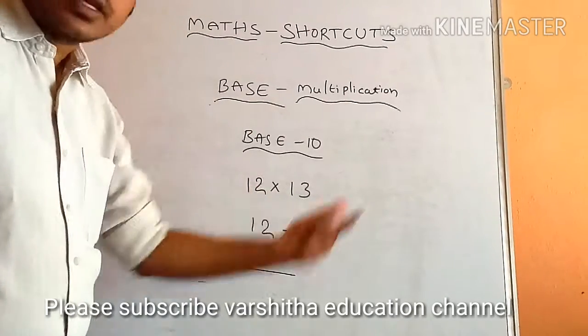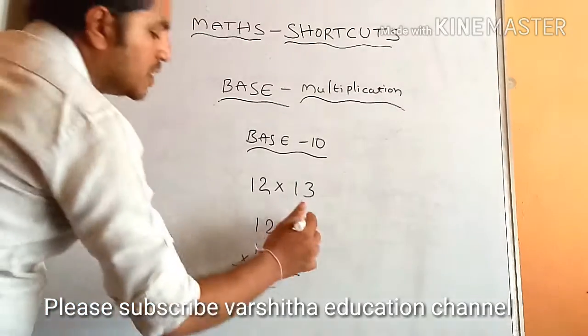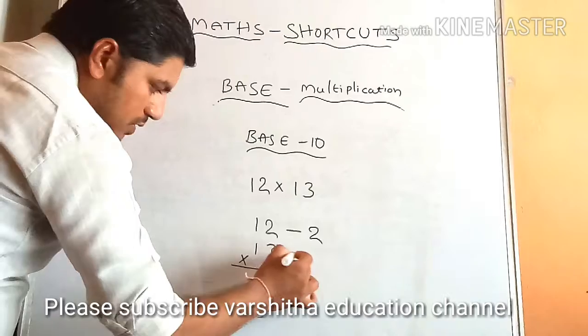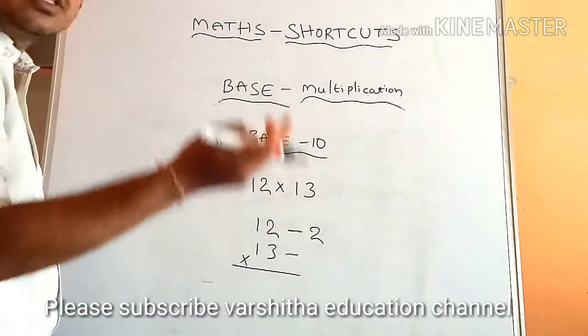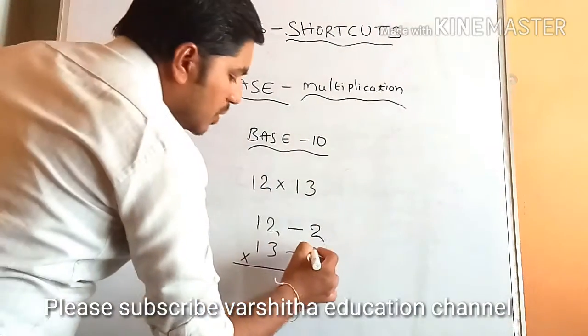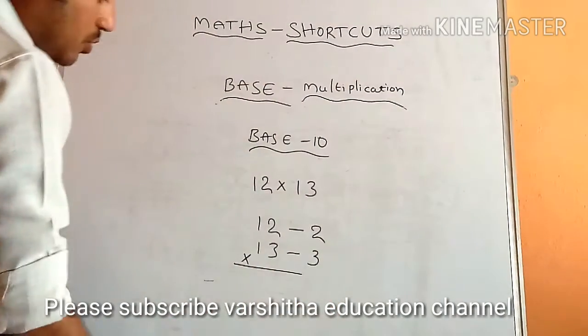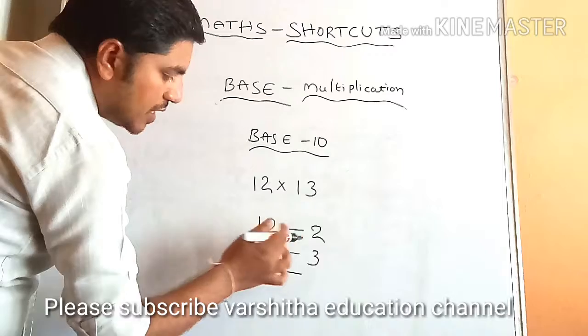many extra values will be present? It should be 2. Then next one is 13, means it is more than 10, so how much value will be there? It should be 3. So then I am going to use this - 12 is cross